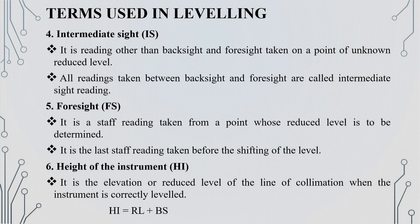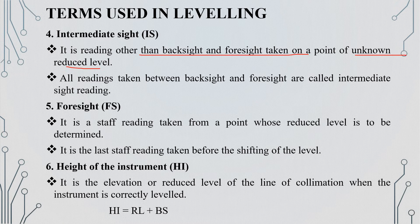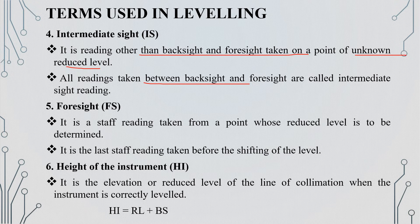The next term is intermediate sight. Intermediate sight is a reading other than backsight and foresight, taken on a point of unknown reduced level. It is a staff reading taken from a point whose reduced level is to be determined.